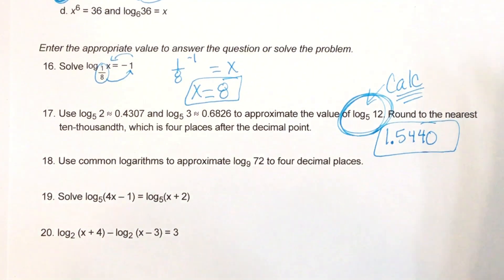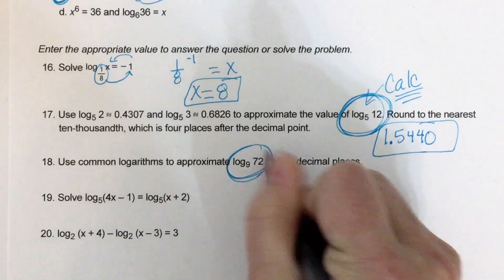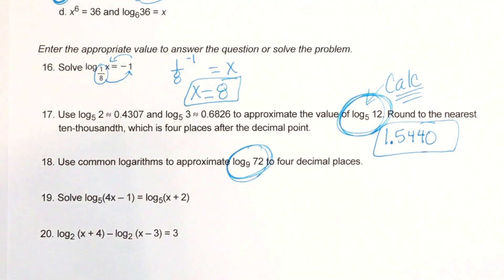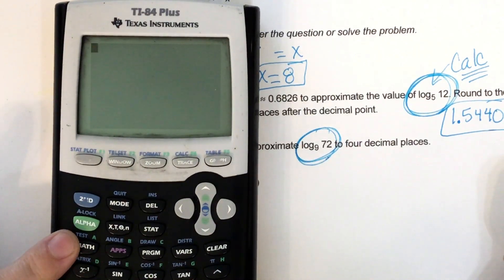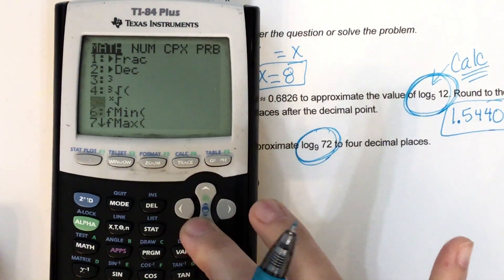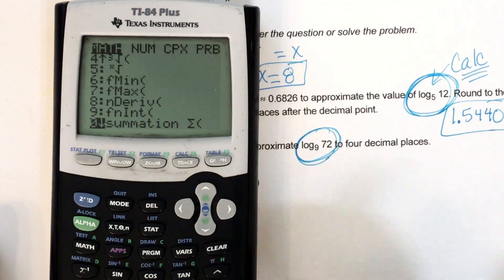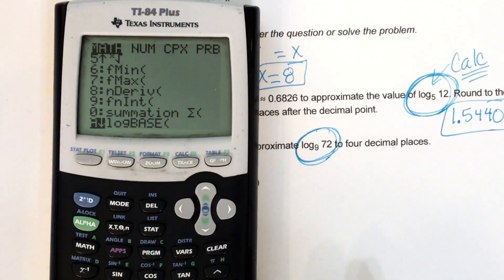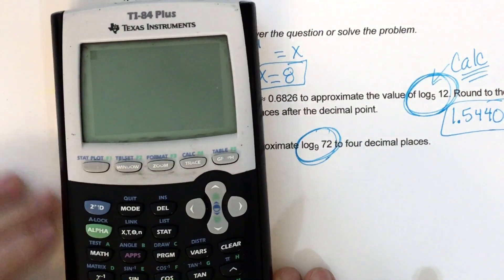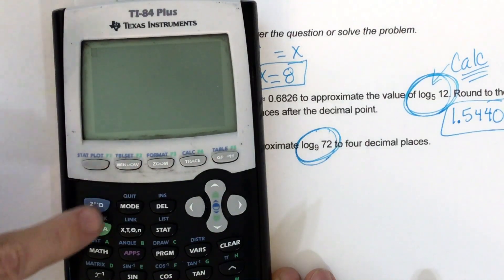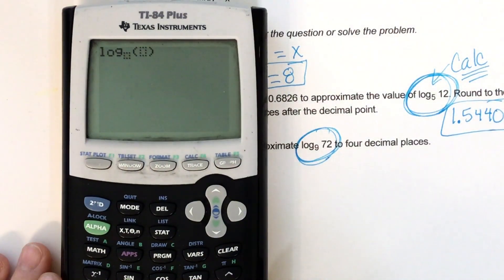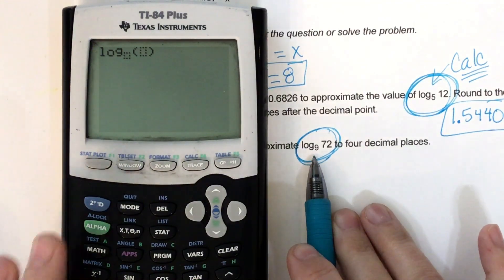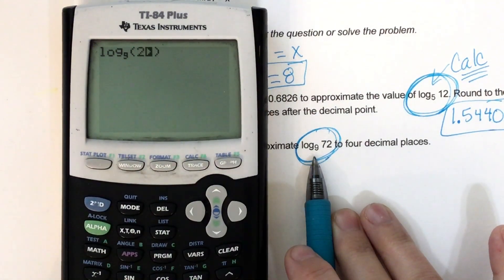Okay, and then number 18, same thing. So let me show you again what you can do to find these. So either push the math button and arrow down until you see letter A and hit enter, or you can alpha window, and it's choice number 5. So I put my base in, which is 9, and I put my 72 in.